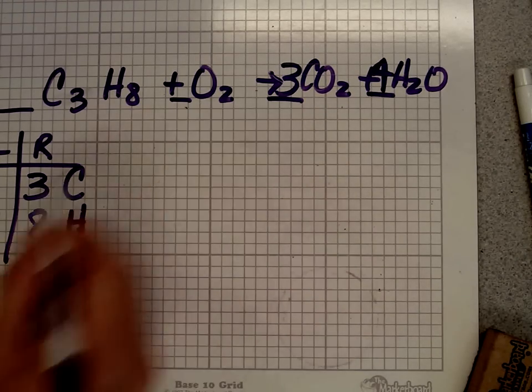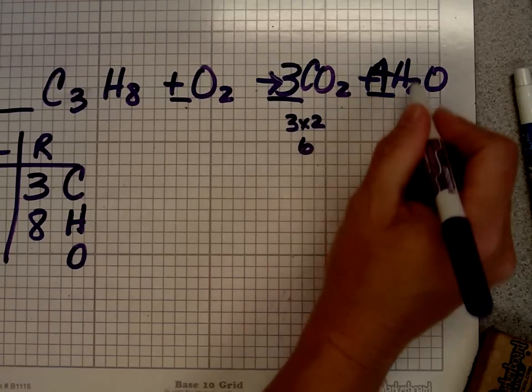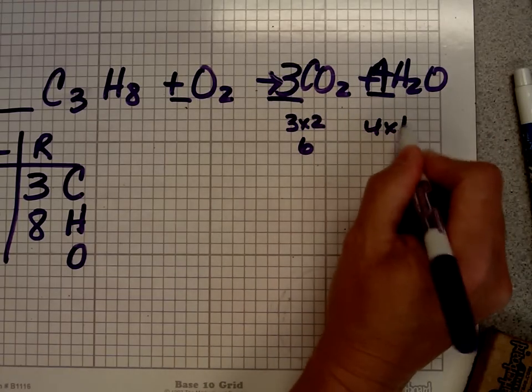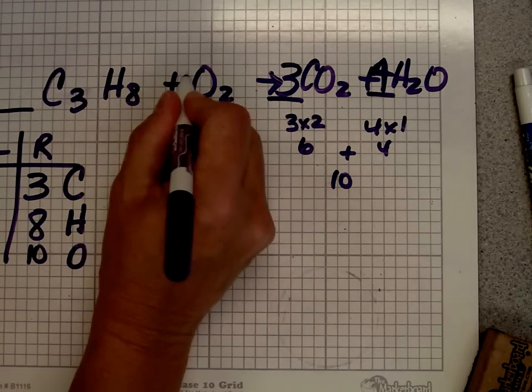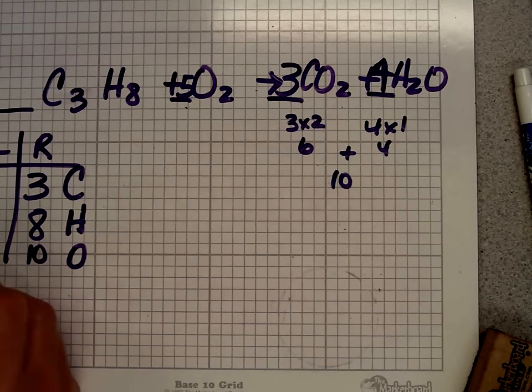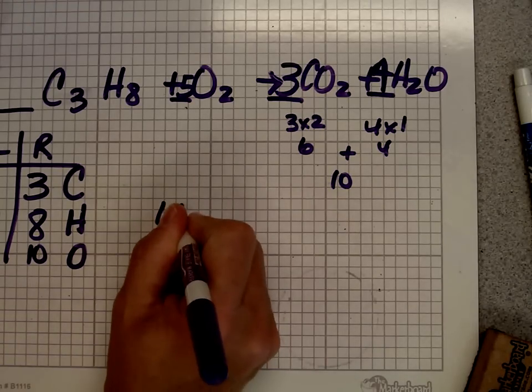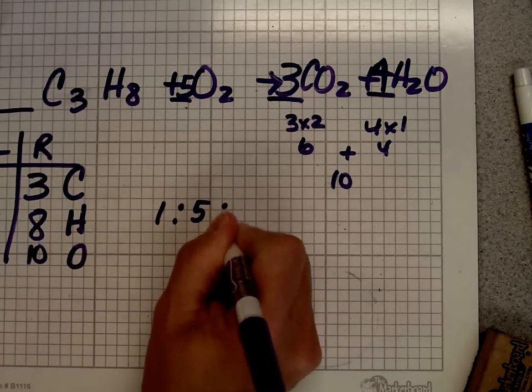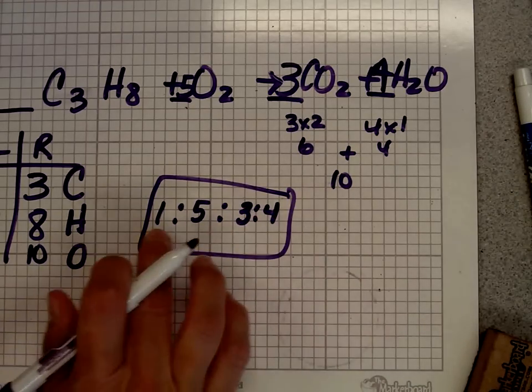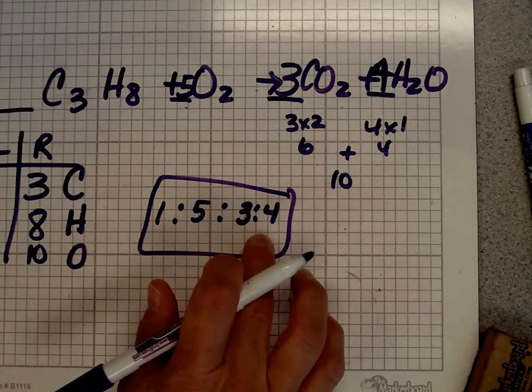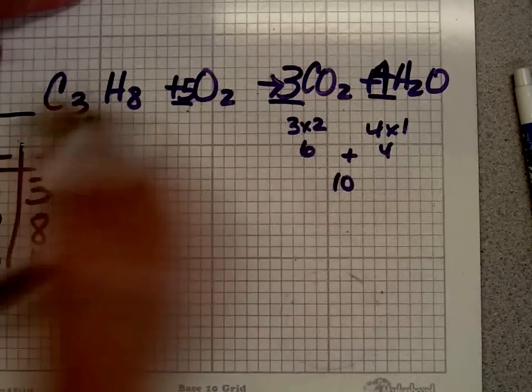Now, let's look at oxygen. I have two on the left. But on the right, I have three times two, so I have six. And then four times one, so I have four. So all together, I have ten oxygens. But I only have two here. Well, if I put a five right there, suddenly that becomes ten. And that becomes ten. And that's my equation's balanced. My coefficients are one, five, three, four. And I always take a look at that when I'm done and make sure that that's the lowest whole number ratio. If it's the lowest whole number ratio, I'm good to go. Let's do one last equation.